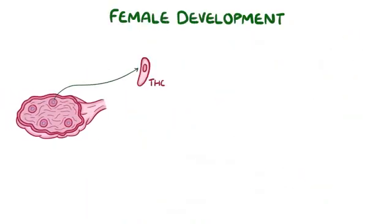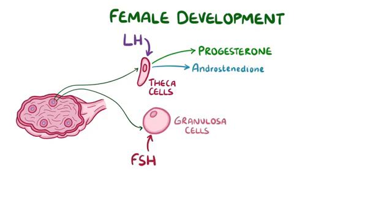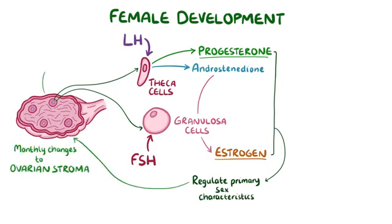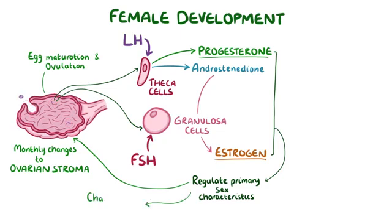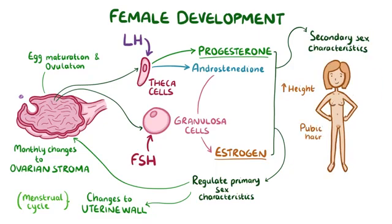In females, the theca cells respond to luteinizing hormone by producing progesterone and androstenedione. Then, follicle-stimulating hormone causes the granulosa cells to convert androstenedione into oestrogen. During puberty, waves of oestrogen and progesterone regulate primary sex characteristics, like monthly changes to the ovary stroma to promote egg maturation and ovulation, and changes to the uterine wall lining as part of the menstrual cycle. They also direct secondary sex characteristic development, like increased height and growth of pubic hair and breasts.